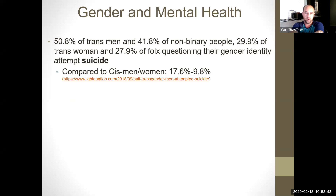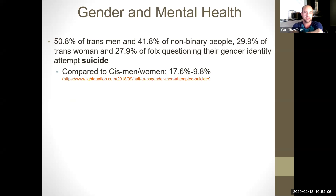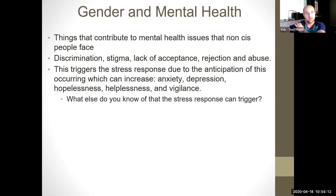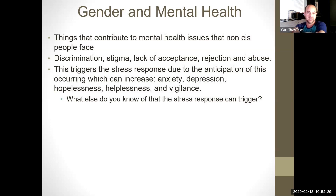50.8% of trans men, 41.8% of non-binary people, 29.9% of trans women, and 27.9% of folks questioning their identity attempt suicide, in comparison to cis men and cis women at 9.8 to 17.6%. These numbers are significantly lower than what the reality is. Some things that can contribute to mental health issues for non-cis people are discrimination, stigma, lack of acceptance, rejection, and abuse. This triggers a stress response due to the anticipation of this occurring, which can increase anxiety, depression, hopelessness, helplessness, and vigilance.